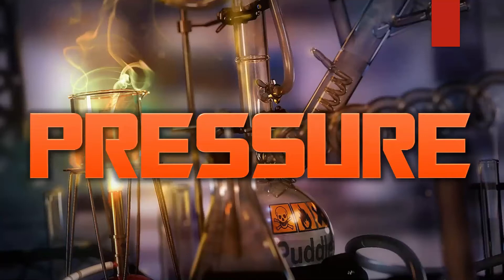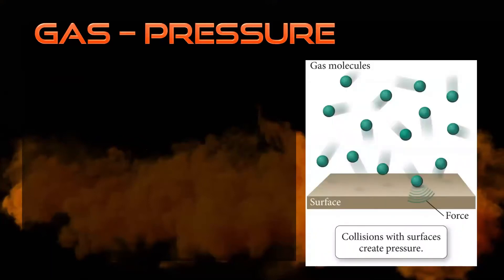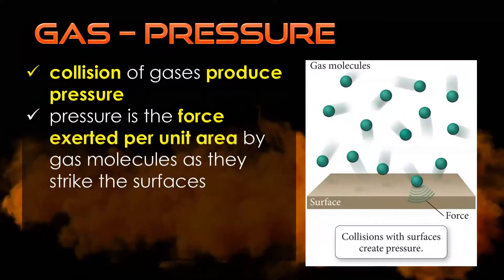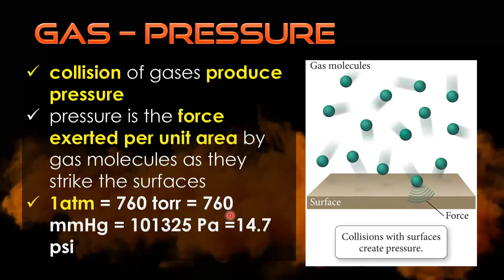A very important concept we must understand about gases is pressure. For gas molecules, collision of gases produces pressure. Pressure is defined as the force exerted per unit area by gas molecules as they strike the surface. The standard unit of pressure is ATM, or atmospheric pressure. 1 ATM is equal to 760 torr, equal to 760 mm of mercury, equal to 101,325 pascals, or equal to 14.7 psi.